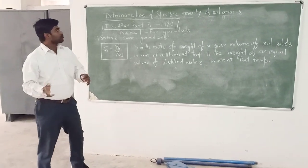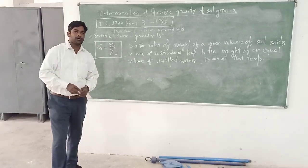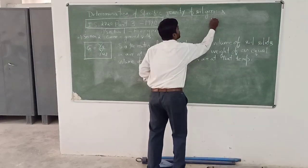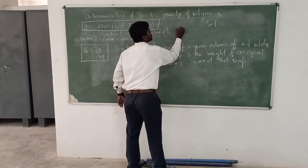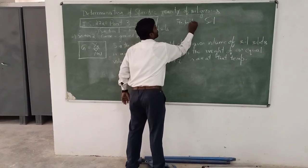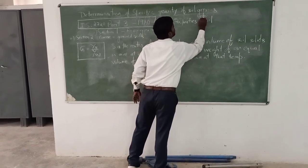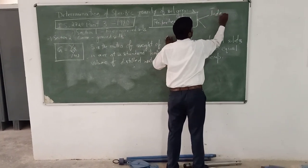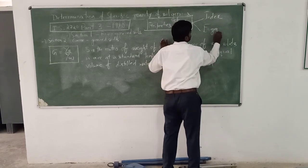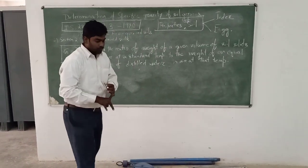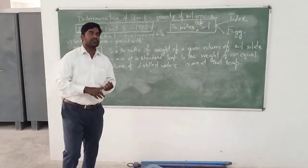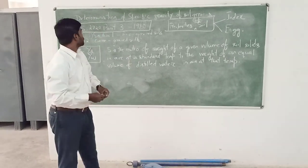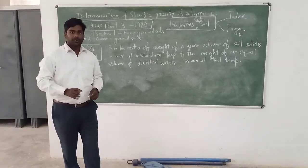Before moving to the experiment, let us understand why we are doing this. Why are we going to find out the specific gravity of a soil? The properties of any kind of soil are of two types: index properties and engineering properties. The main engineering properties are permeability, compressibility, and shear strength. Similarly, specific gravity is also one engineering property of the soil.